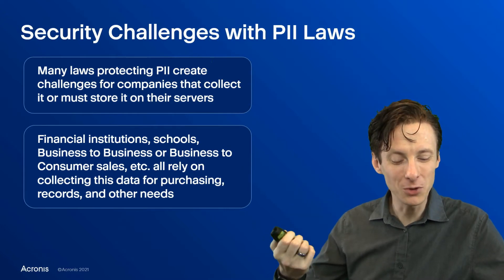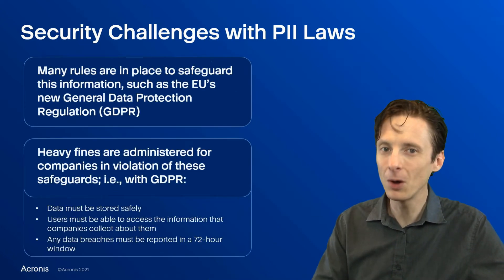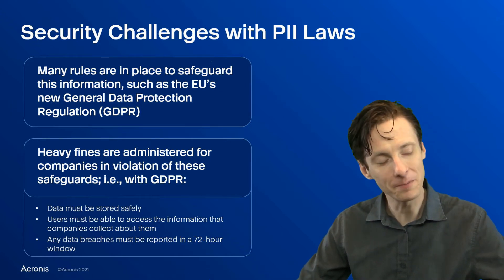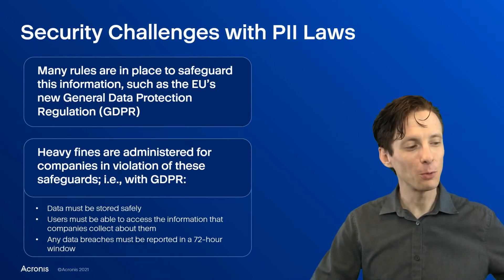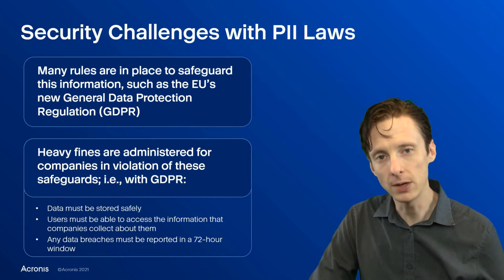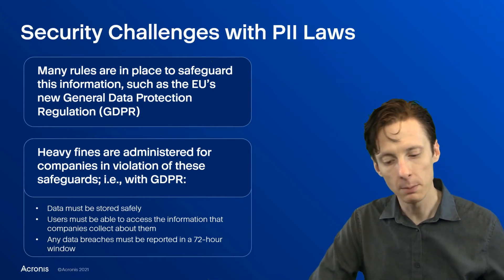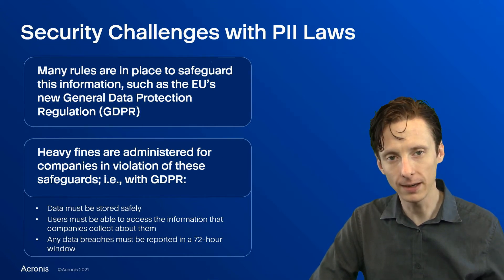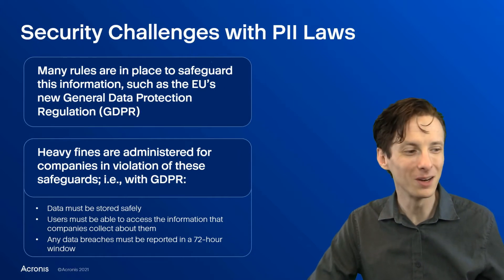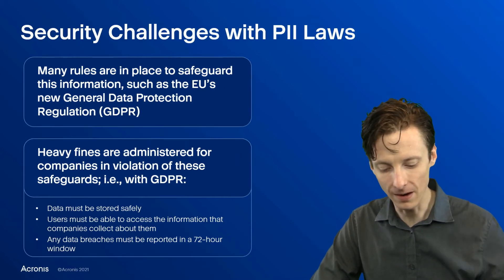So while we do need to protect it, and there are consequences for not doing so, we also need to keep it around — we can't just not keep it. One example of a PII law is GDPR, and that applies primarily to European citizens. But if you've got European customers or branches, then it applies to you too. There are heavy fines with things like GDPR.